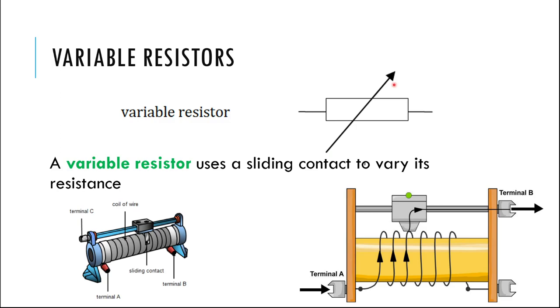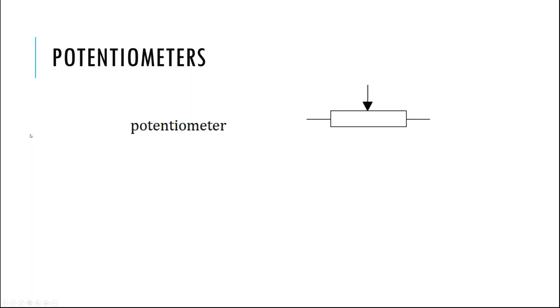You might see a symbol like this. It looks like the resistor with an arrow kind of up and through it. That means it's a resistor which you can on the fly change its resistance. Depending on the context of the problem, that might make it a little more exciting.